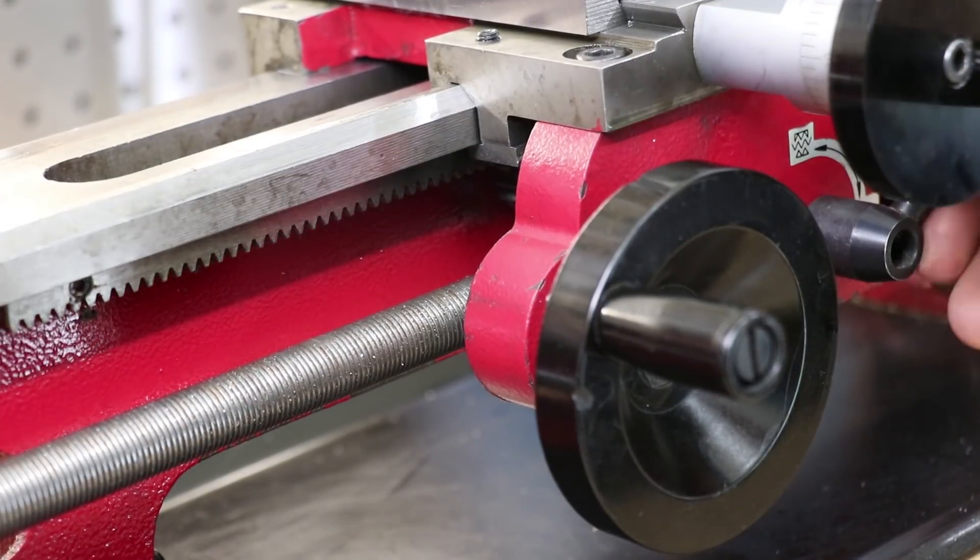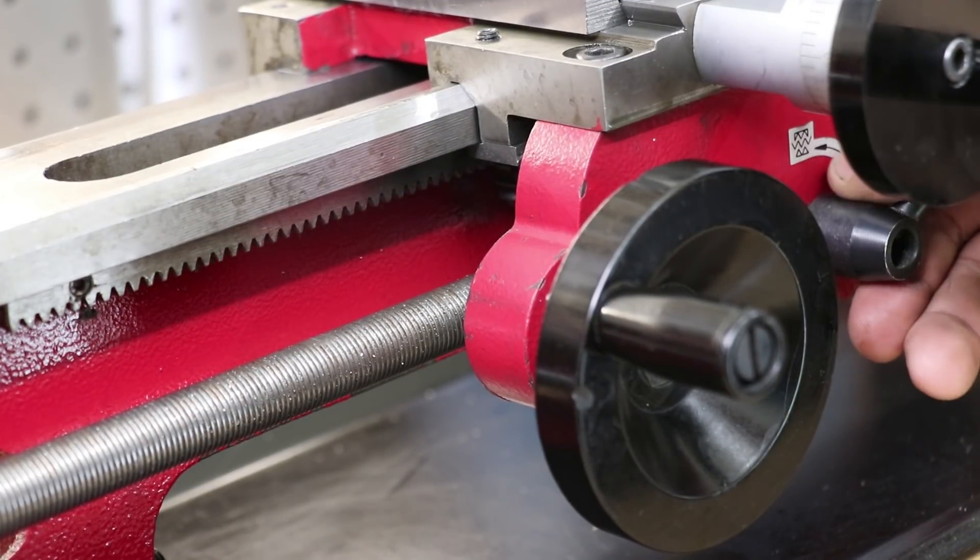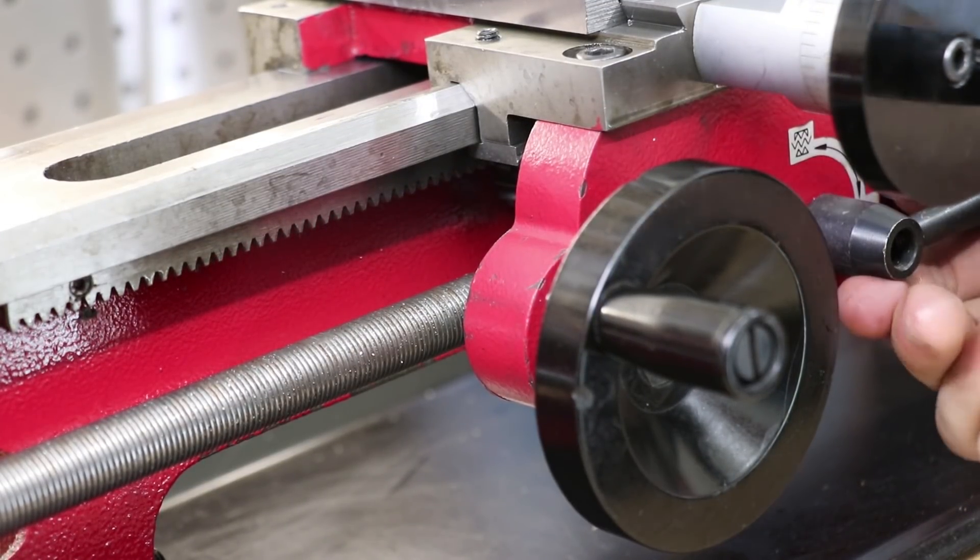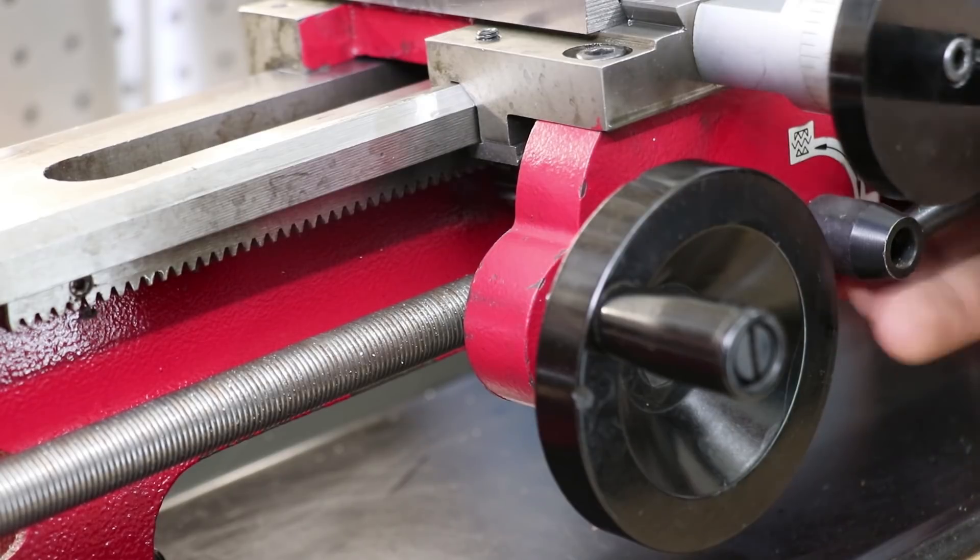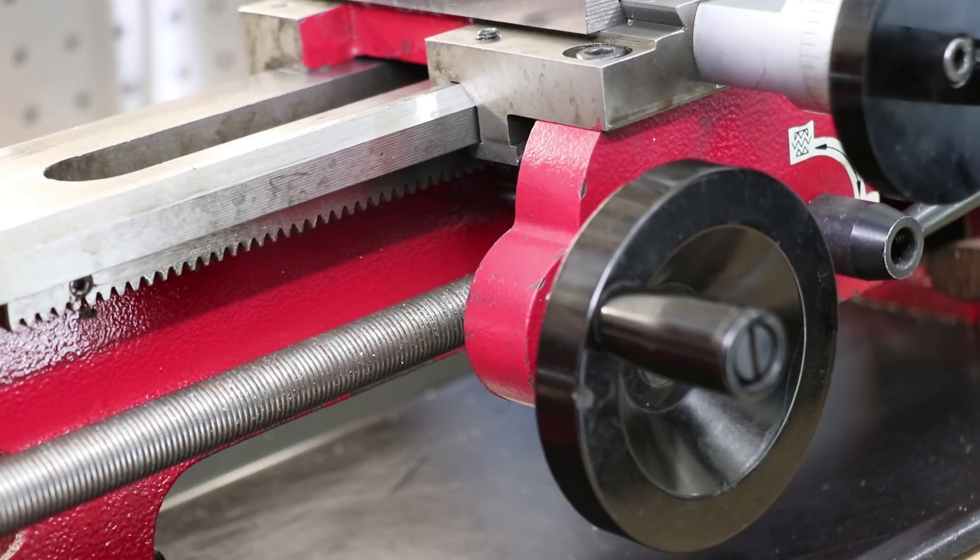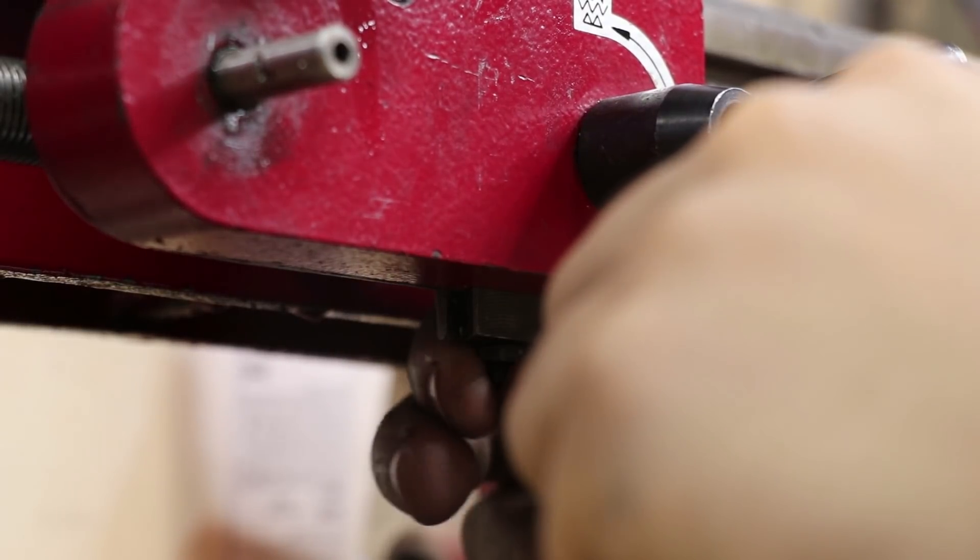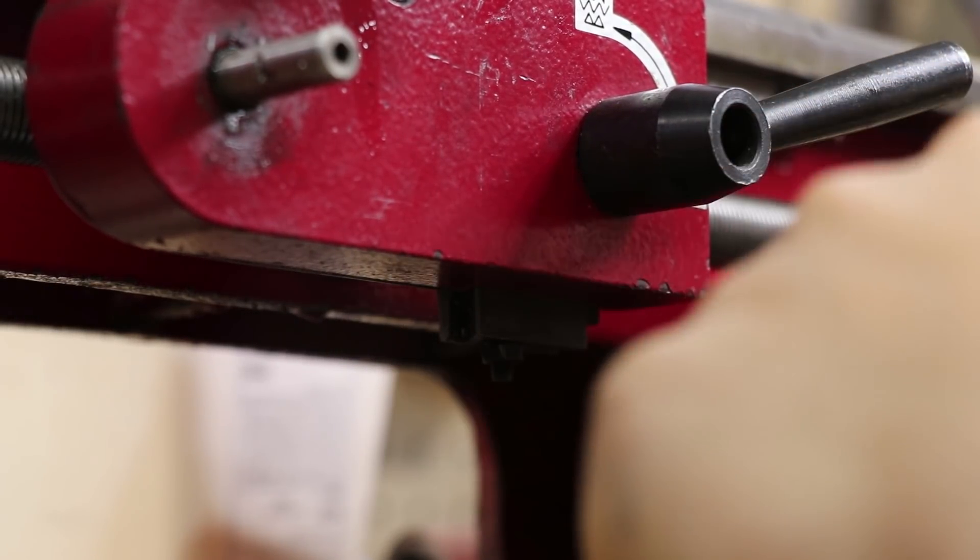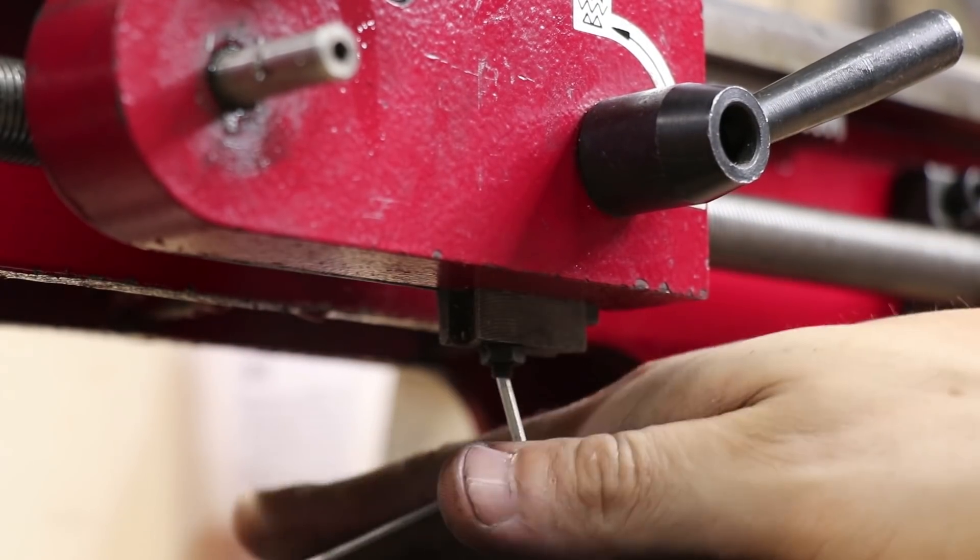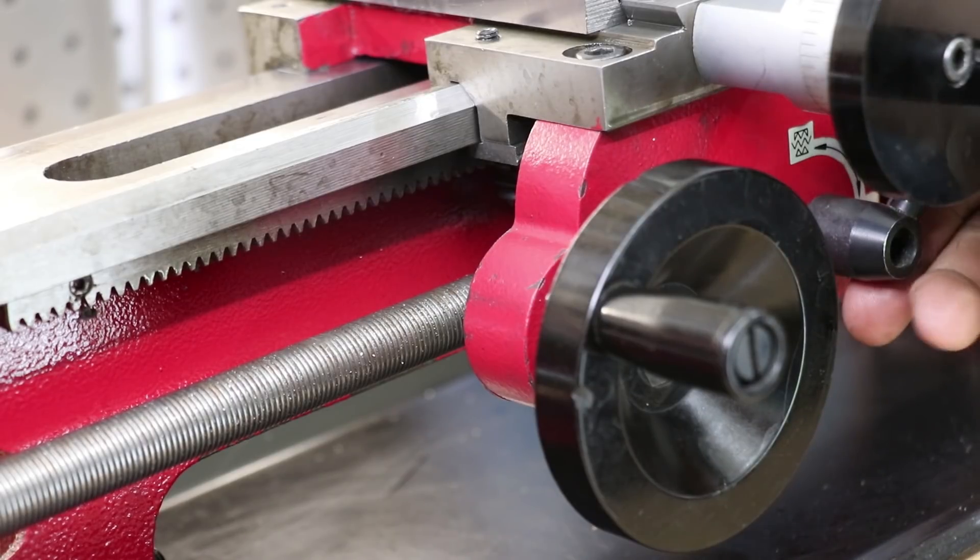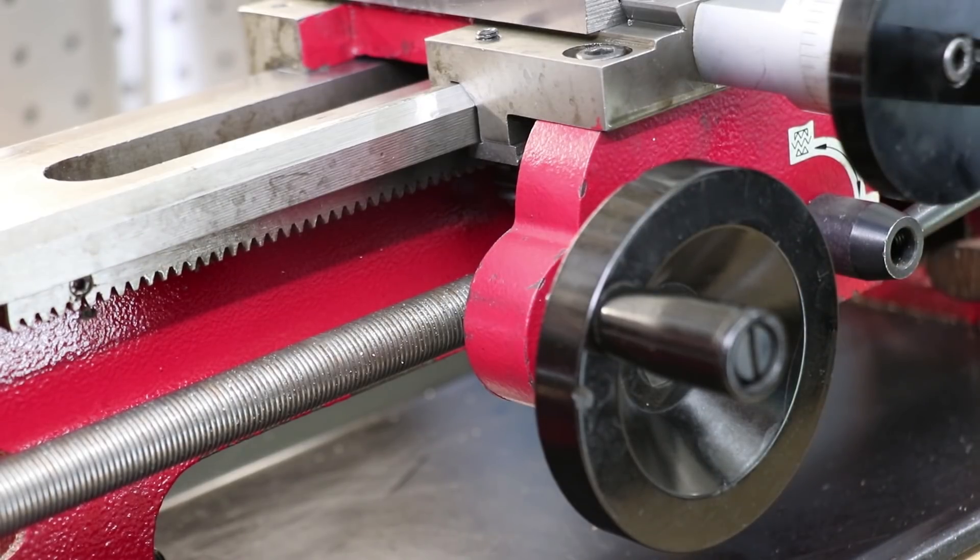One thing that I should have done a while back is to adjust the half nut. As you can see, when I lock it, it pulls the lead screw up, and this causes unnecessary load and strain on the lead screw. Now it is a little bit hard to see, but adjusting it is pretty easy. There's a small grub screw on the underside of the carriage, which you move to adjust it. Now I didn't get it perfect, but it's a lot better than it was before.